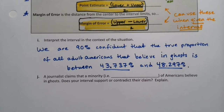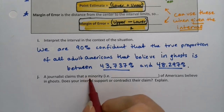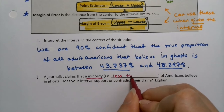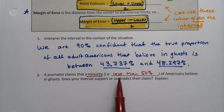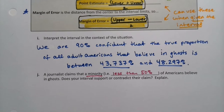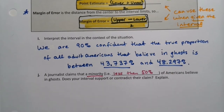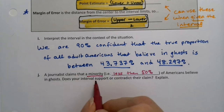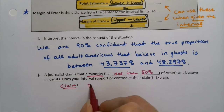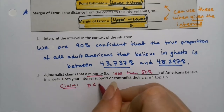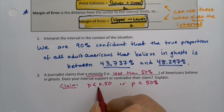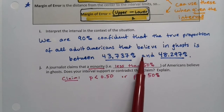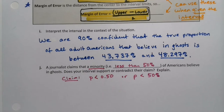Now, a journalist claims that a minority of Americans believe in ghosts. What would a minority be? Minority means less than 50% — less than half. So if somebody claims less than half of Americans believe in ghosts, does this interval support or contradict that claim? The claim is that the true proportion of Americans that believe in ghosts is less than 50%, or P is less than 0.50. Does this interval support that? Sure — the whole interval is less than 50%. So your interval supports, because the whole interval is below 50%.